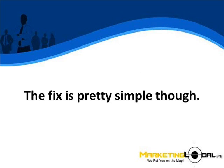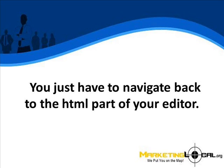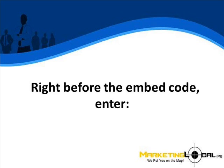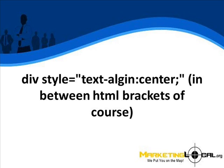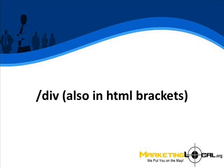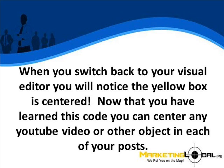The fix is pretty simple, though. You just have to navigate back to the HTML part of your editor. You won't see the yellow box now — you will see the embed code for the video. Right before the embed code, enter the following: a div tag with style="text-align: center;" — inside HTML brackets, of course. And then, after the end of the embed code, add a closing slash-div tag, also in HTML brackets. When you switch back to your visual editor, you will notice the yellow box is centered.